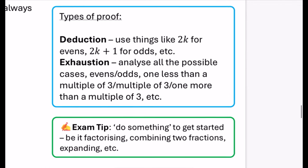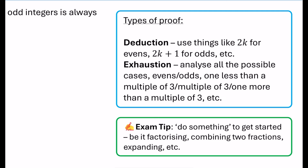For deduction, this should feel quite familiar from GCSE. It's where you're trying to deduce the answer — there's not much trick to it, just using things that you might have previously used. For example, if they're talking about even numbers, we would call something like 2k. Odd numbers, either 2k plus 1 or 2k minus 1, just building those things up from the language that they give you.